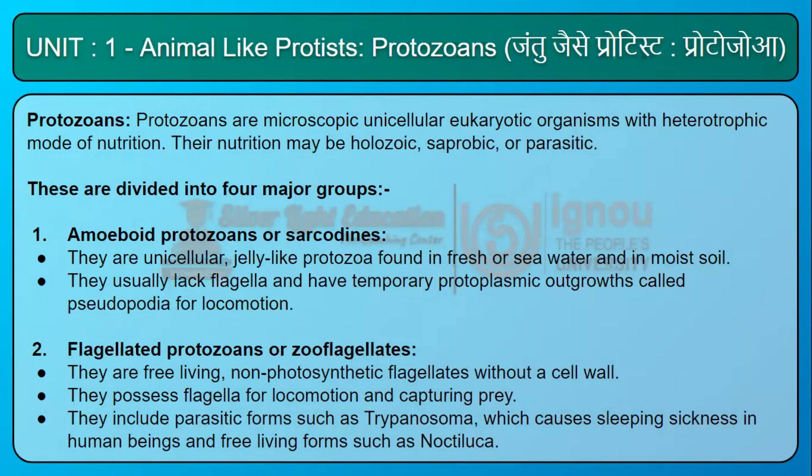Second, flagellated protozoans or zooflagellates. They are free-living, non-photosynthetic flagellates without a cell wall. They possess flagella for locomotion and capturing prey. They include parasitic forms such as Trypanosoma.